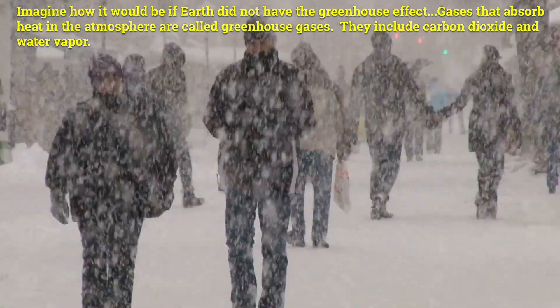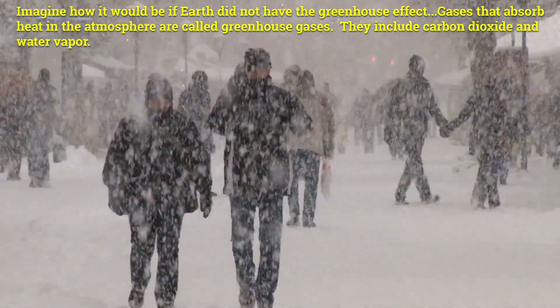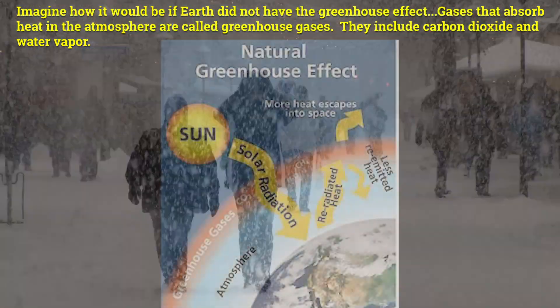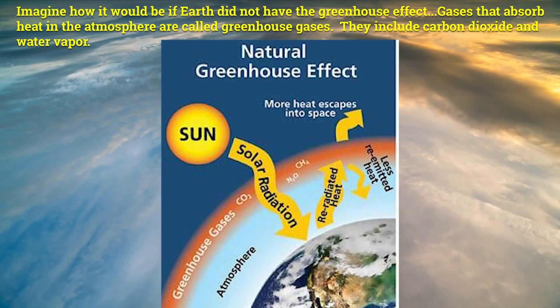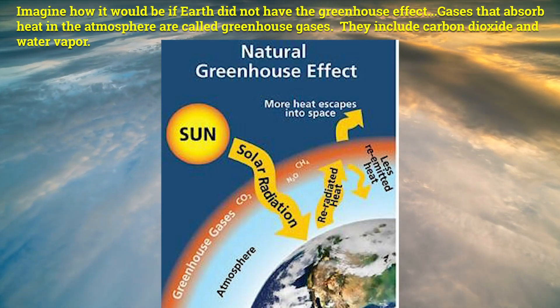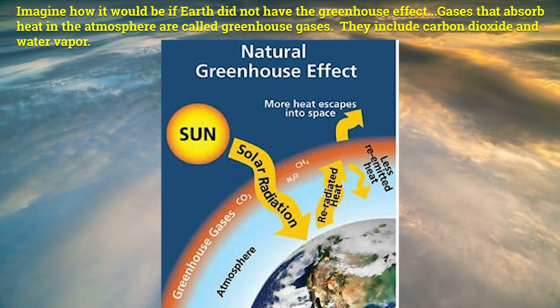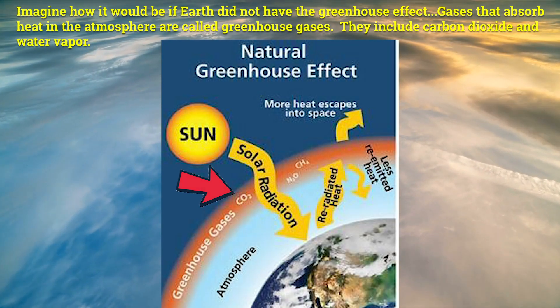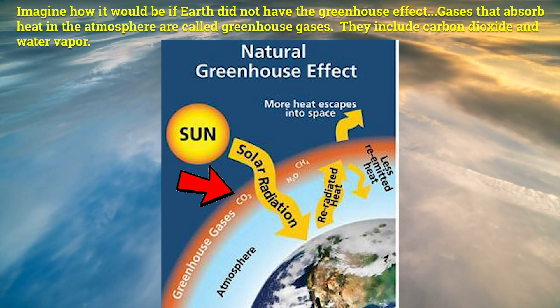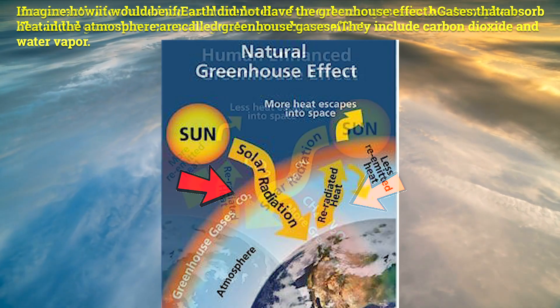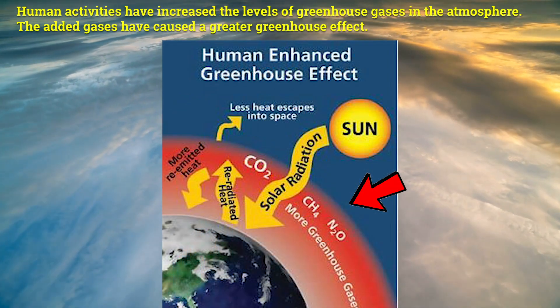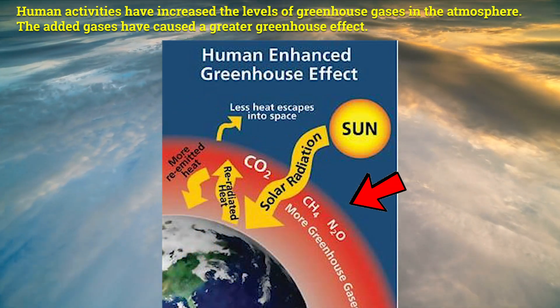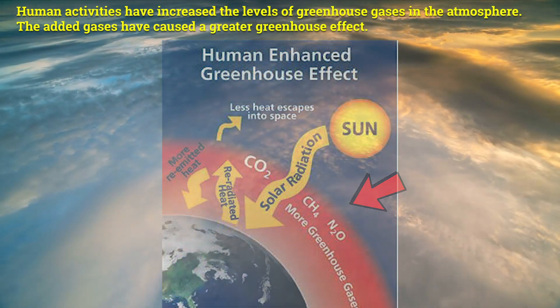Imagine how it would be if Earth did not have the greenhouse effect. Gases that absorb heat in the atmosphere are called greenhouse gases. They include carbon dioxide and water. The addition of greenhouse gases has caused a greater greenhouse effect.